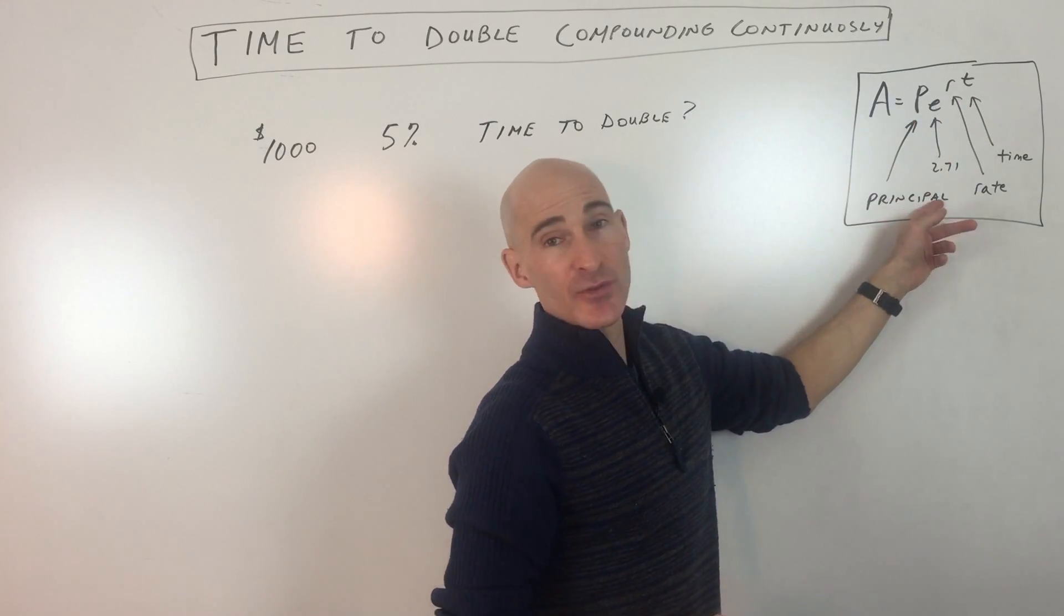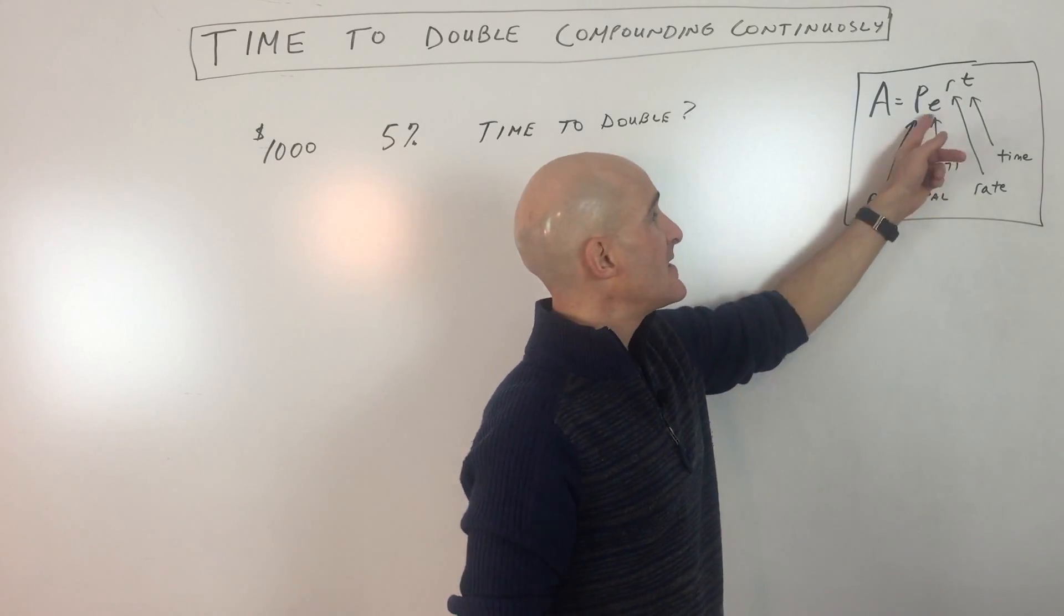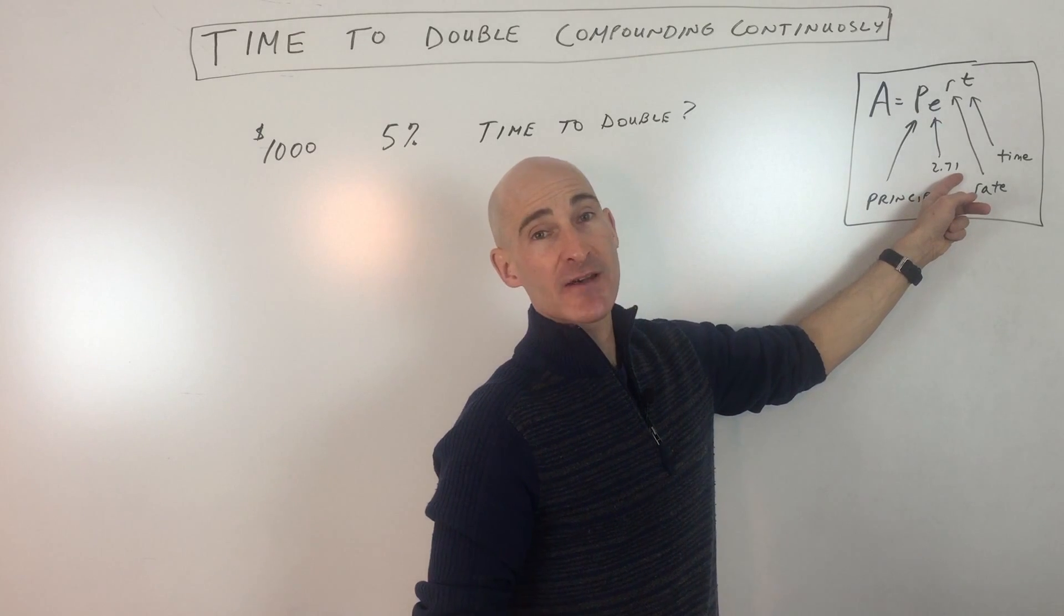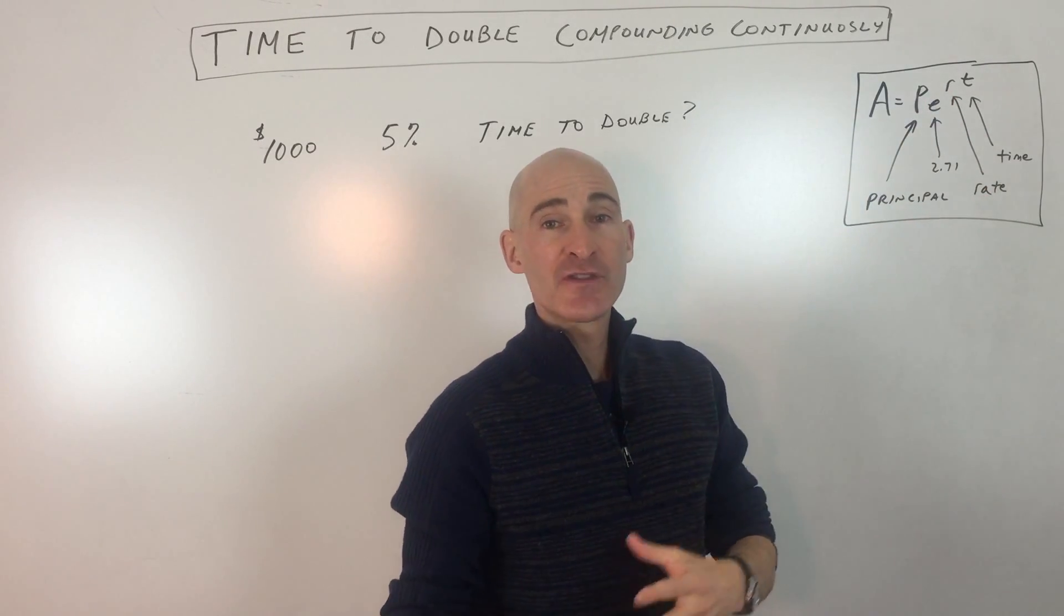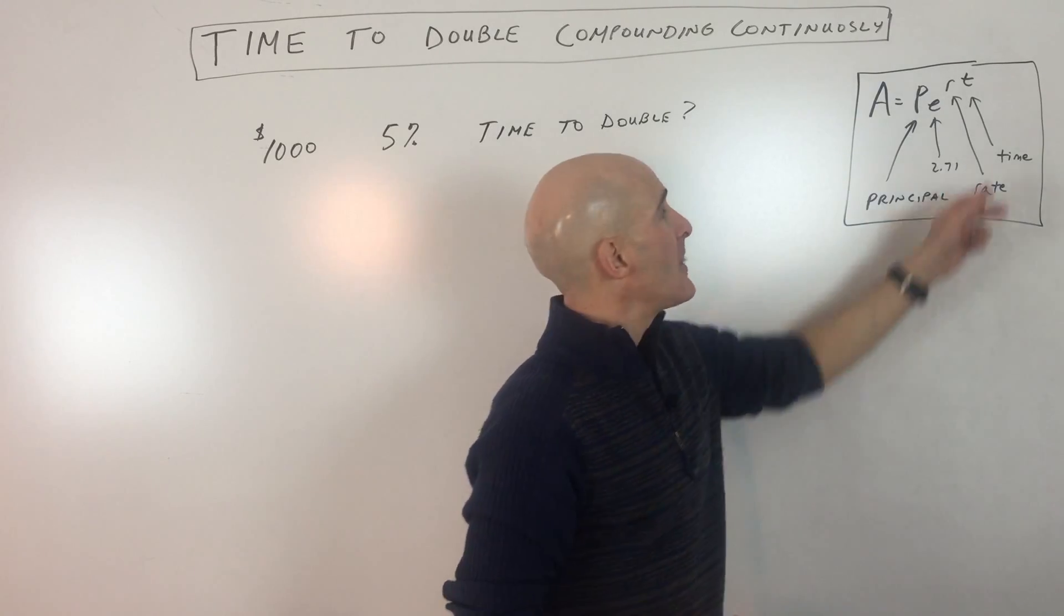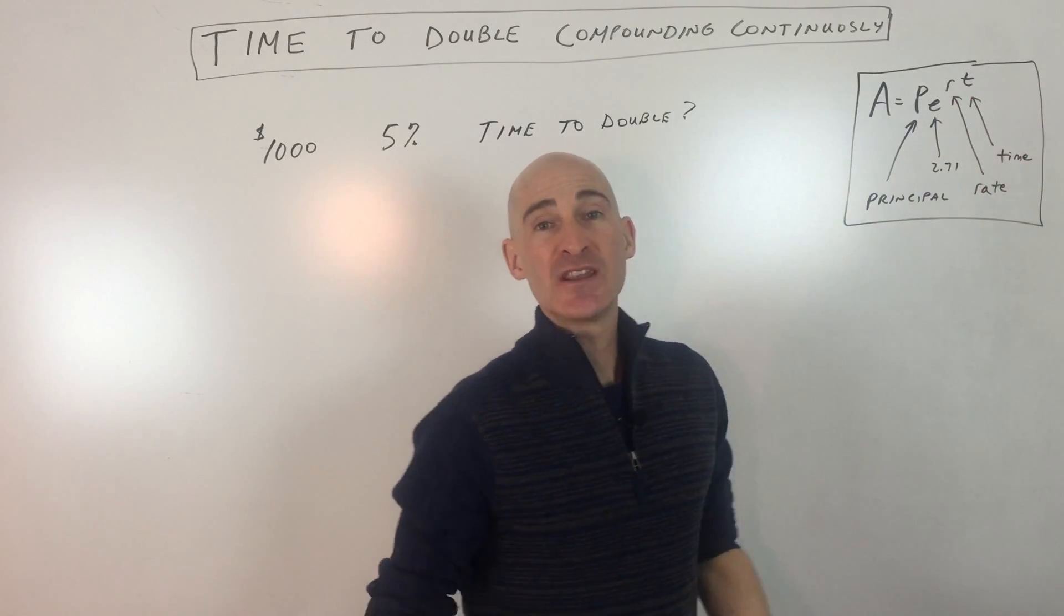P represents the principle, that's what you're starting with. E is the natural base E, 2.71. R is the interest rate. You want to convert that into a decimal by moving the decimal point two places to the left. And then T is the time, generally in years.